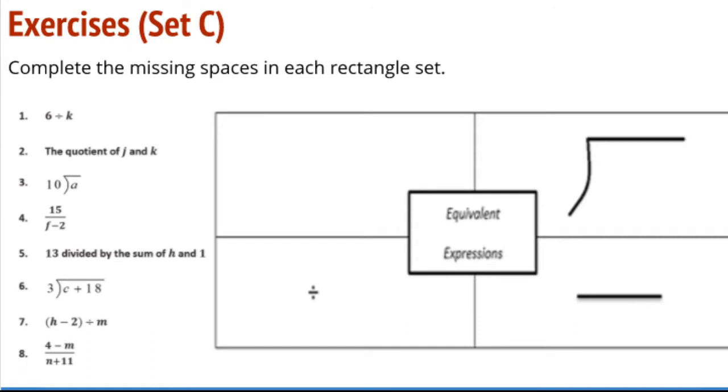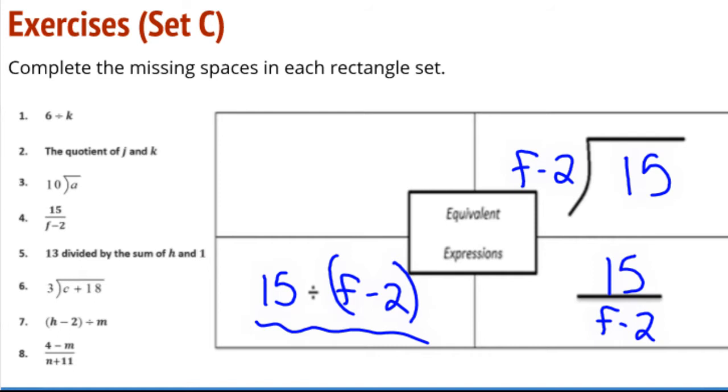Let's take a look at some from set C. How about number 4. 15 over F minus 2. So I've got 15 divided by F minus 2. And once again, got to ask about order of operations. If there's any great takeaway from this lesson, it is when you write division horizontally, you really have to think about when do you need to put parentheses in. So I've got the F minus 2 first and 15 is divided by that. 15 divided by F minus 2. And then thinking about how I'm going to write this in words: 15 divided by 2 less than F.